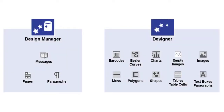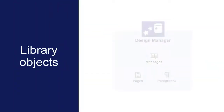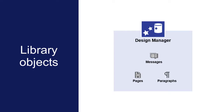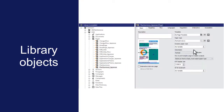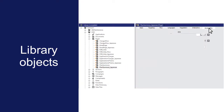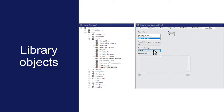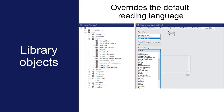You can also set the reading language for individual objects. This is useful if your design contains multilingual content. You can set the reading language for individual library objects, such as pages, paragraphs, and messages, in Design Manager. Open the library object in the Property panel, click the Accessibility tab, and select a reading language. The reading language that you specify for library objects overrides the default reading language for the application.